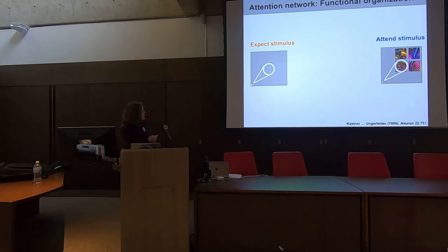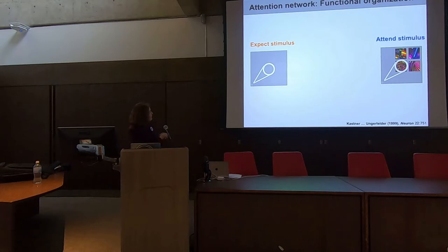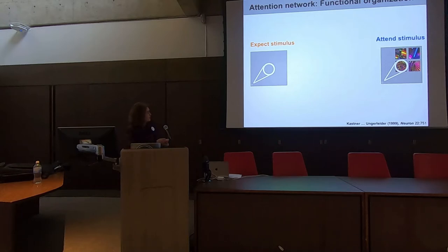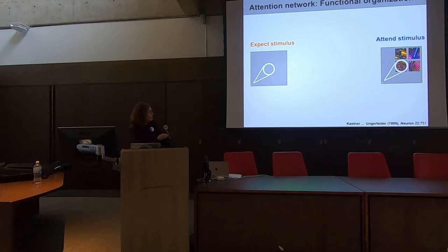We asked subjects to maintain fixation — again, in none of the experiments I'll tell you about will there be a shift of gaze — then to direct attention to a peripheral location in the visual field and simply expect the onset of a stimulus. That stimulus would then appear as an array, with a delay, and the subject had to make a selection at that location. So we have a period with direction of attention without visual input, and then direction of attention with visual input.